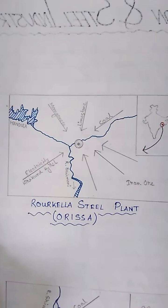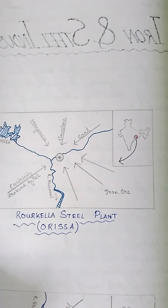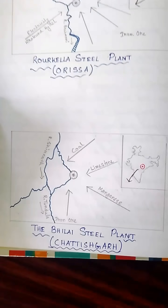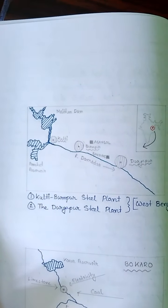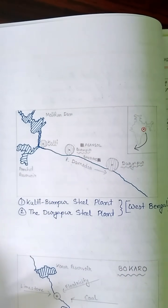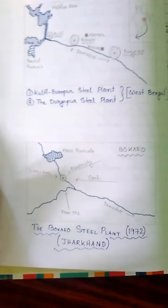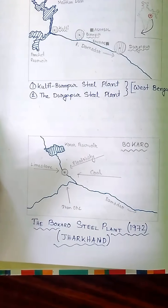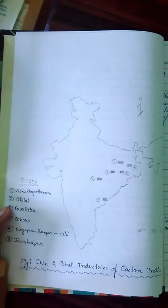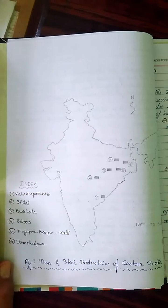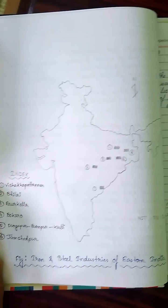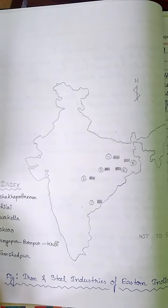The steel plants shown include the Rourkela Steel Plant of Odisha, the Bhilai Steel Plant of Chhattisgarh, the Kulti-Burnpur Steel Plant, and the Durgapur Steel Plant of West Bengal, and the Bokaro Steel Plant of Jharkhand. An Indian map shows where steel industries have centralized, with numbered locations: Visakhapatnam, Bhilai, Rourkela, Bokaro, Durgapur, and Jamshedpur.